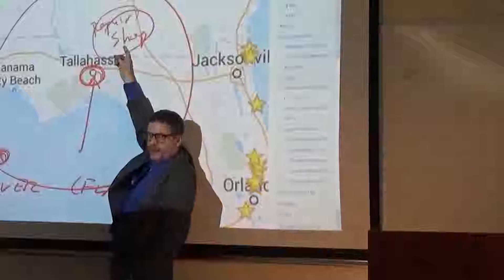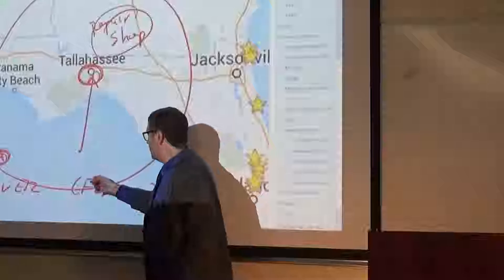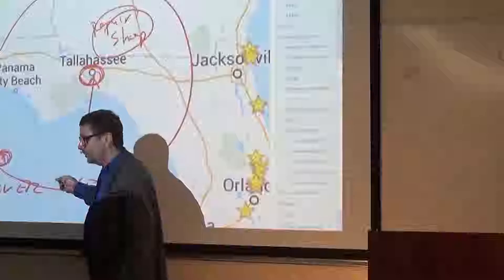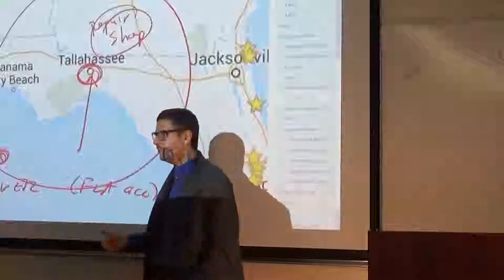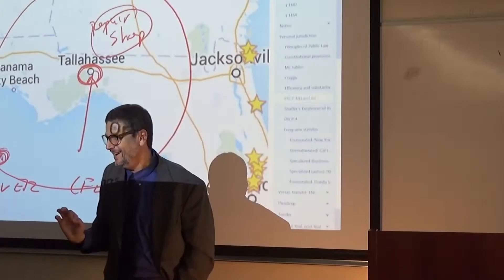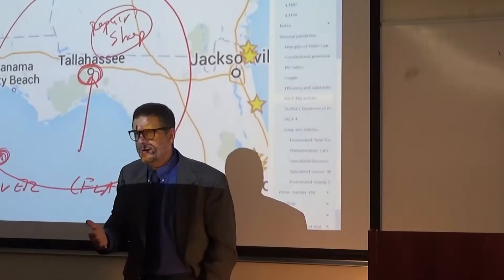Now, imagine if instead of being served there within a district in Georgia, the owner of the repair shop was served out in international waters out in the Gulf of Mexico. Then there's no bulge rule jurisdiction because you have to be served in a federal judicial district. So the elements here. Service in the federal judicial district, one. Within 100 miles of the federal courthouse, two. And the person against whom P.J. is asserted was joined under Rule 14 or 19, three. That's tricky and that's testable.